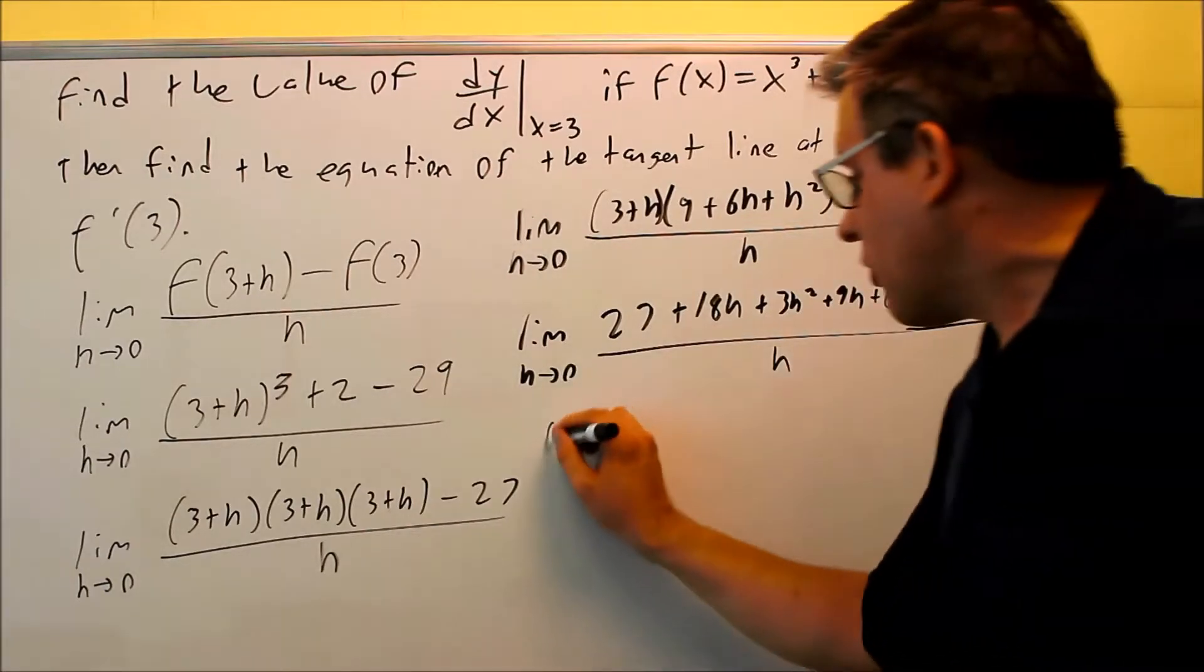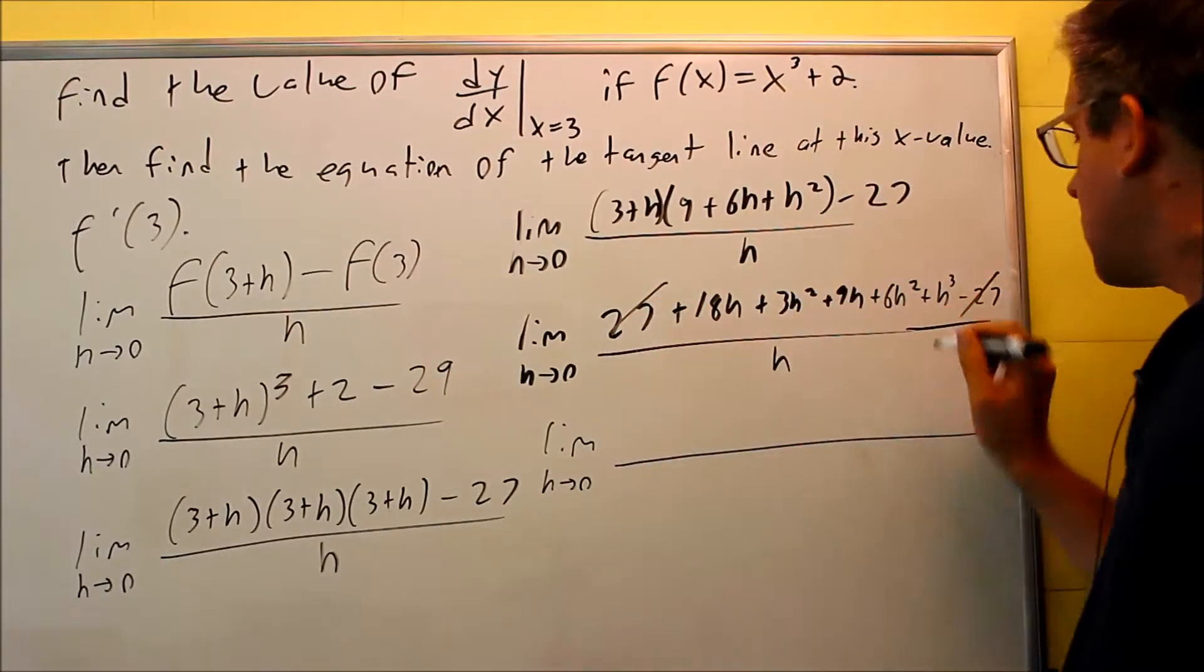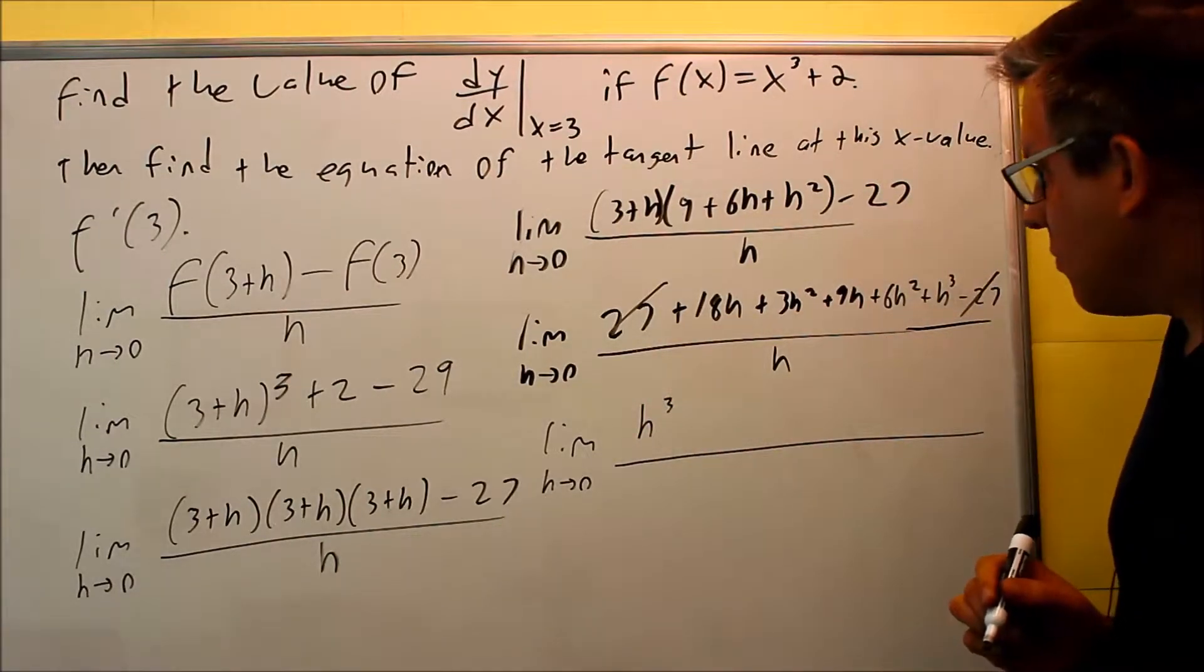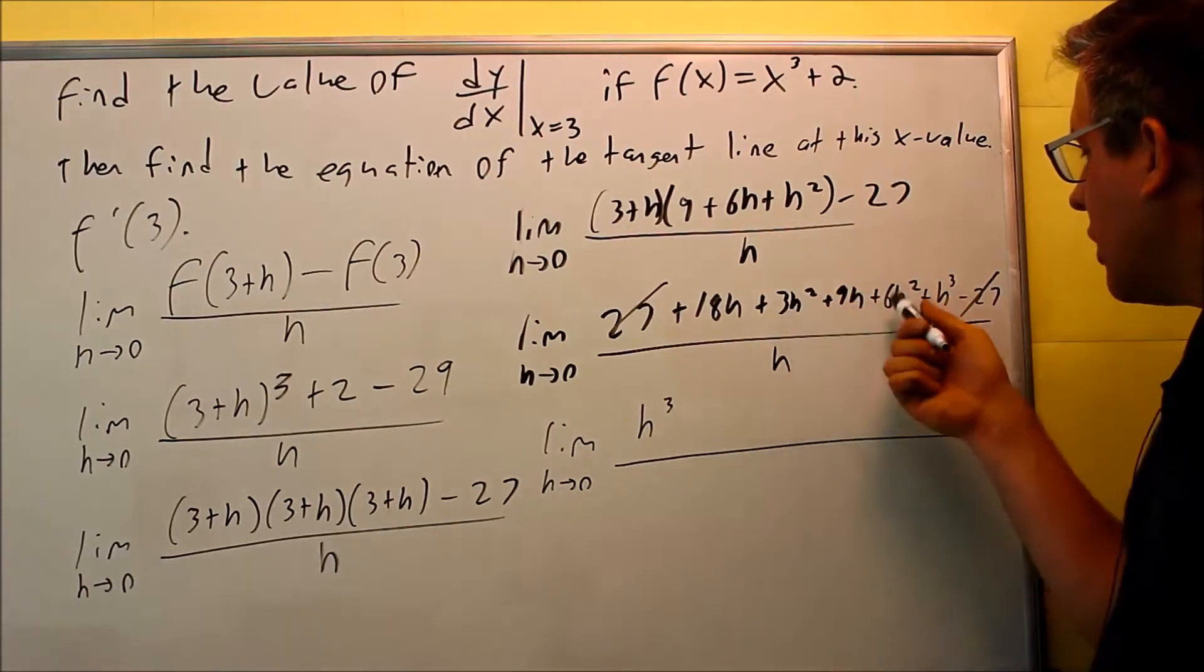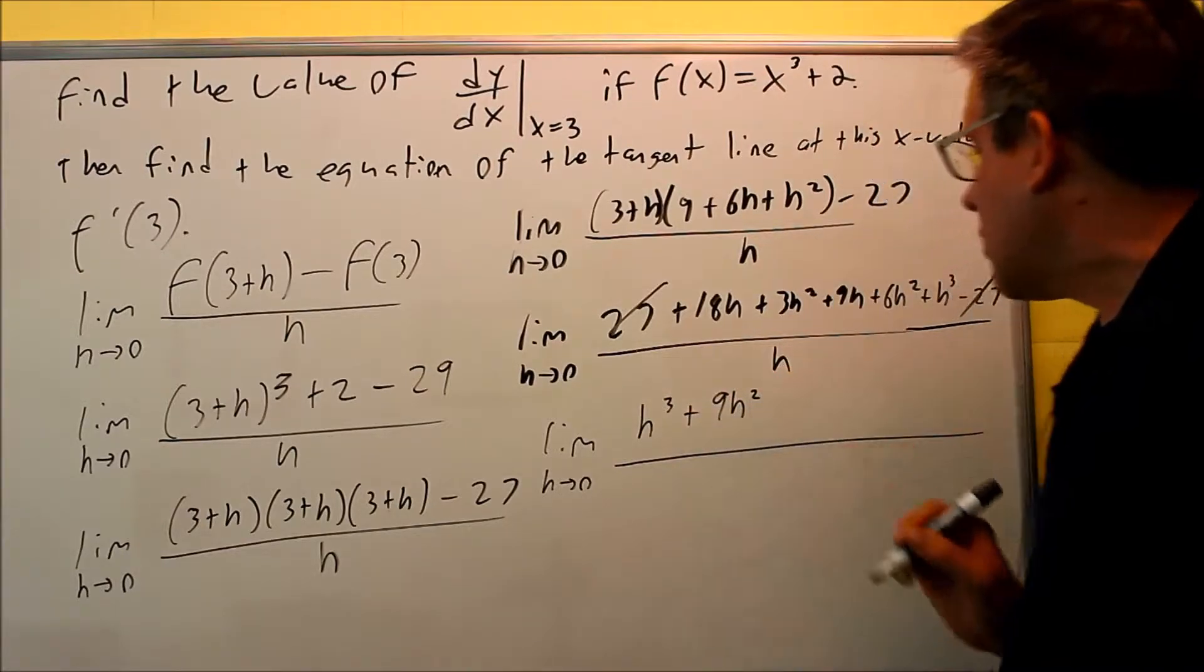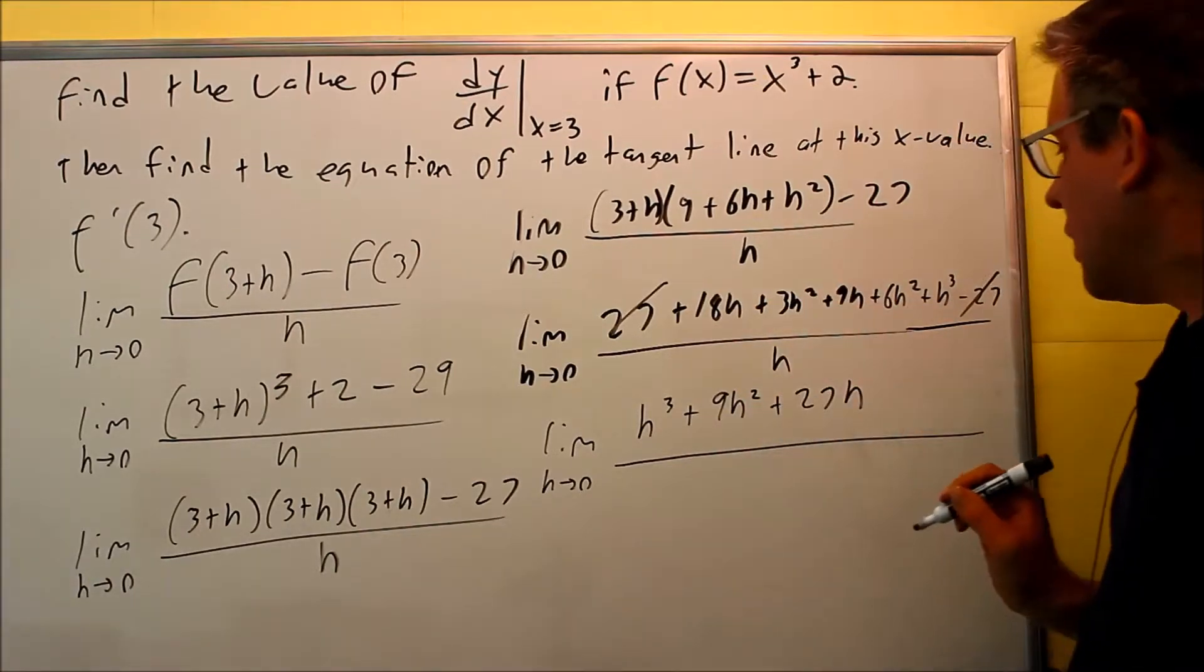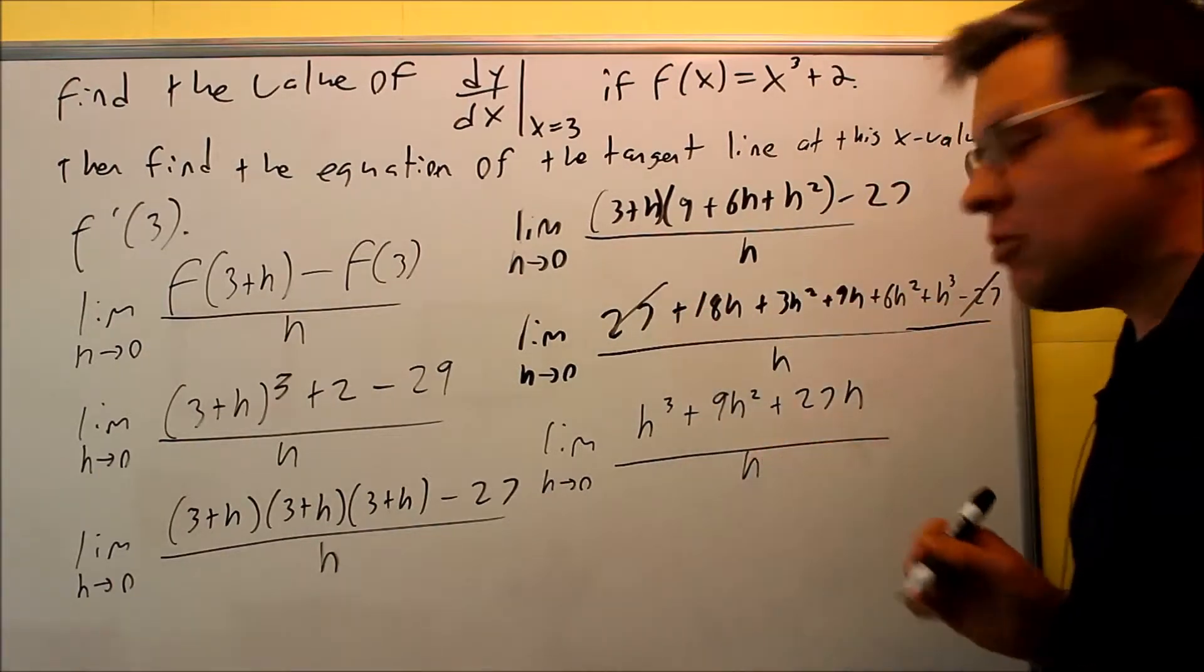We can do some simplifying on this. First of all, the 27s, those are both going to cancel. Then let's look at like terms. I have an h cubed that nothing else is going to go with. Next thing I'm going to do is look at the squares. So I have 3 and 6, it's going to give me 9h squared. I have the h terms, that's going to be 27h. That's it, the single terms of 27s cancel out. All this is going to be over h.